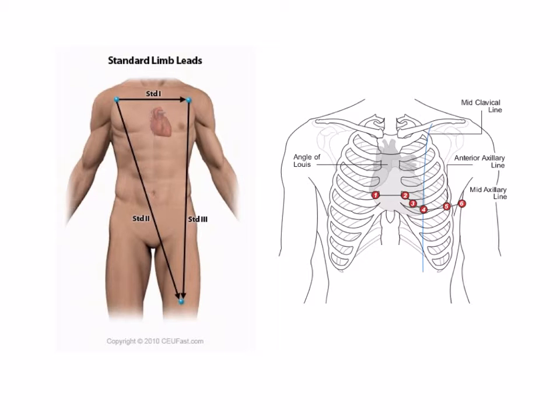The second set of leads we're going to be placing is our precordial leads. These are placed horizontally across the chest, and these are going to give us our leads V1 through V6 on our 12-lead EKG.